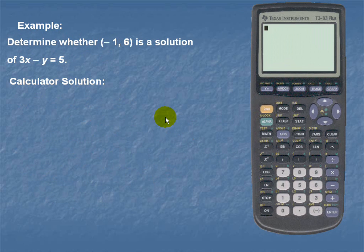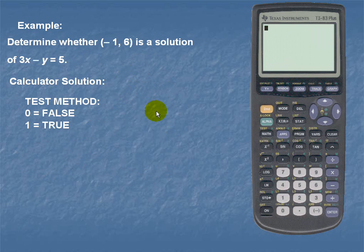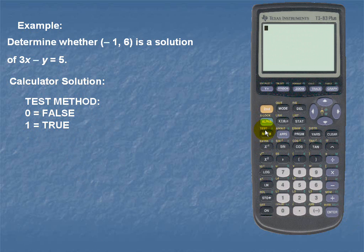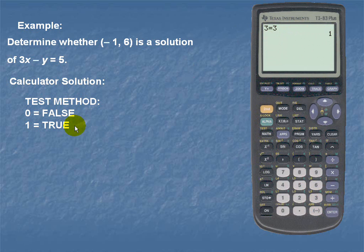Let's take a look at the calculator solution. Once again, we'll determine whether the ordered pair negative 1 comma 6 is a solution of the equation 3x minus y is equal to 5. In order to do so, we must utilize the test method of our calculator. When using the test method, if a 0 is returned the statement is false; if a 1 is returned, the statement is true. The test is located above our math button and it's a second yellow function. For example, 3 is equal to 3 returns a 1 — a true statement. And 9 is less than 6 returns a 0 — a false statement.